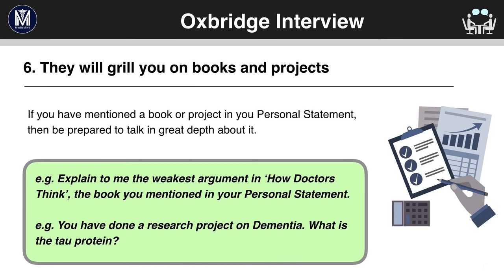Six: they will grill you on books and projects. If you've mentioned a book in your personal statement, they'll ask you to talk about it in much greater detail than in another interview. You could talk for a good 30 seconds to one minute, but then they'll ask follow-up questions. For example: 'Explain to me the weakest argument in How Doctors Think — the book you mentioned in your personal statement.' Or, 'You've done a research project on dementia — what is the Tau protein?'